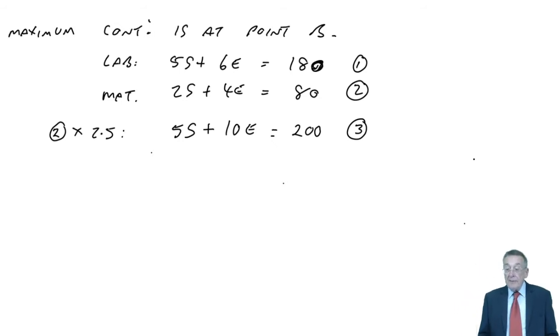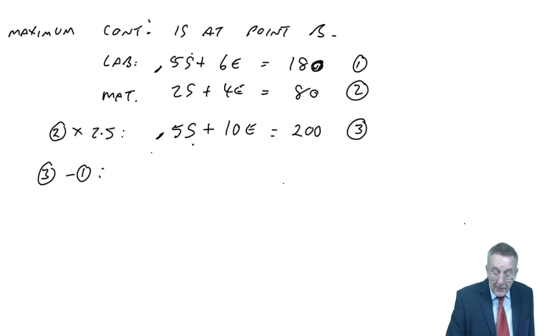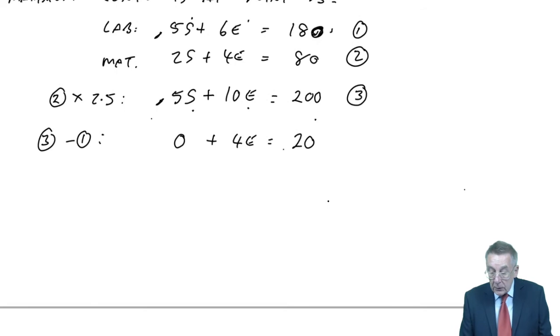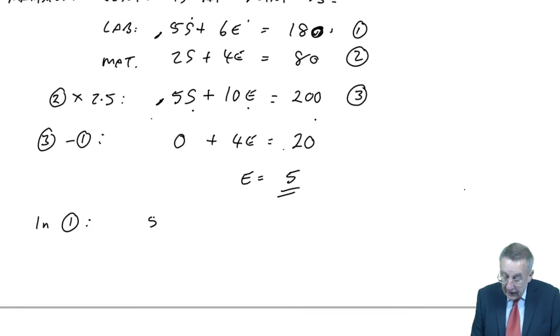And I'll tell you why in a moment. But if I multiply each term by 2.5, 2 times 2.5 gives us 5S, 2.5 times 4 gives us 10E, and 2.5 times 80 gives us 200. Now the reason I chose to multiply by 2.5 is to deliberately have 5S in both the first and the third equation. And the reason I wanted that is if I now take away the first equation from the third, so we're in a sense upside down, but 5S minus 5S is 0.